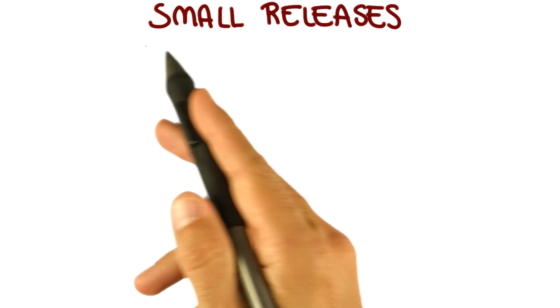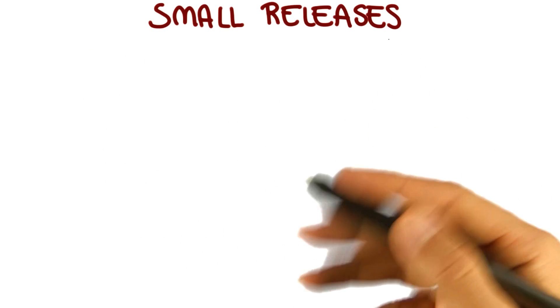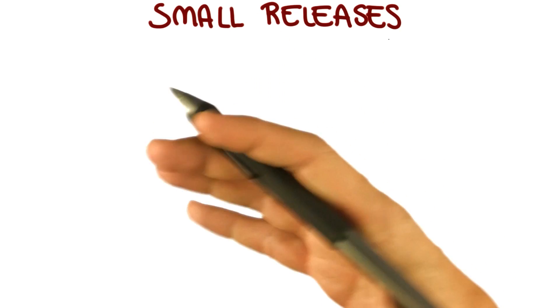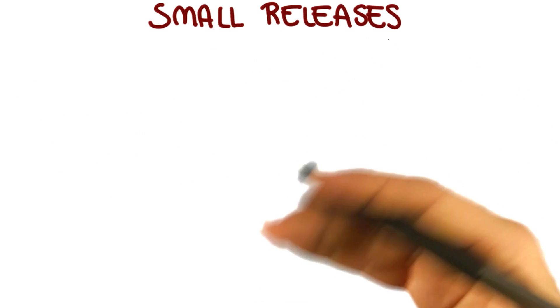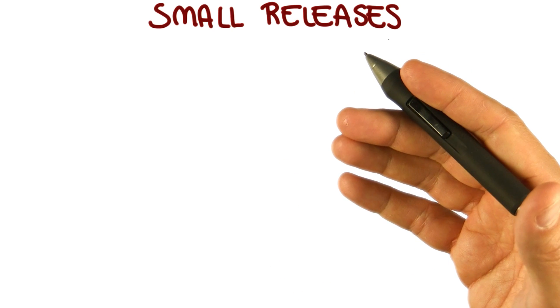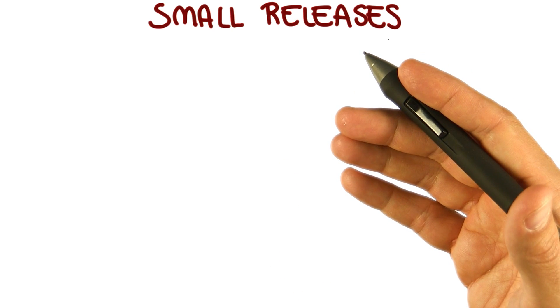The first practice that we just saw goes together with the small releases practice. This idea that instead of having a big release at the end of a long development cycle, we try to release very often.